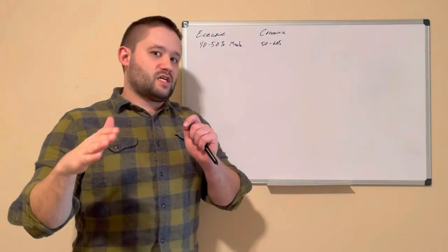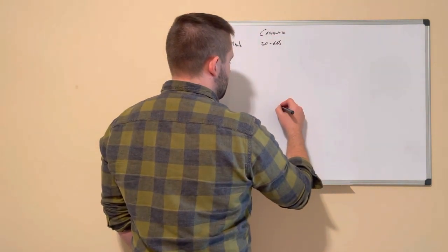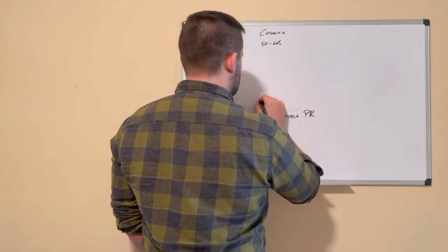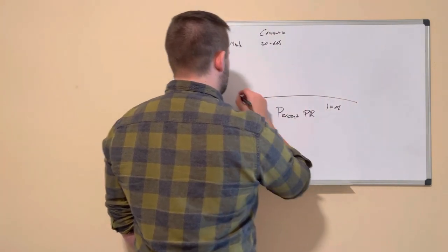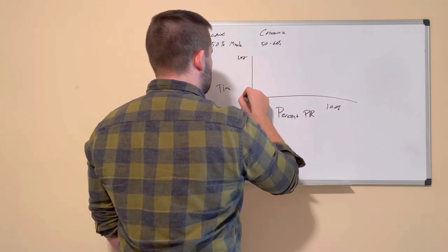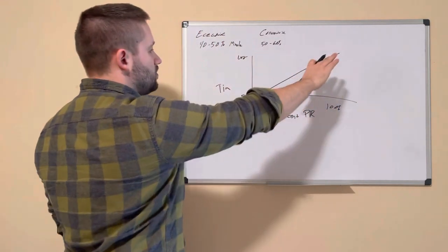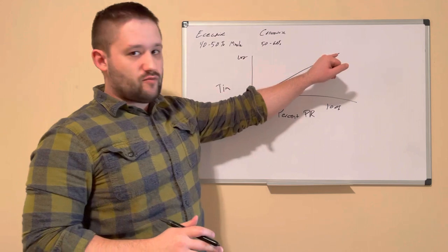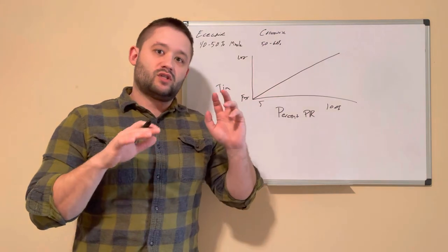And what tends to happen, what does happen, is that if we look at our percent, we'll say PR, 5 to 100, and we look at this over time, we see a very linear movement when we get closer and closer to that 100 percent. We see a very linear movement of the bar speed slowing down.